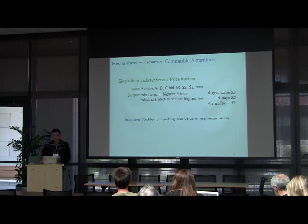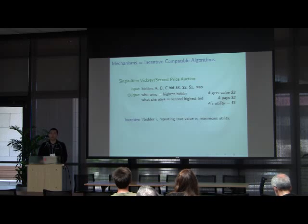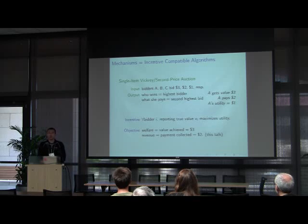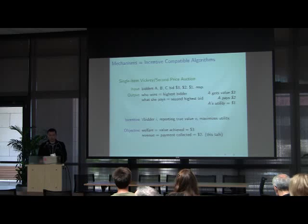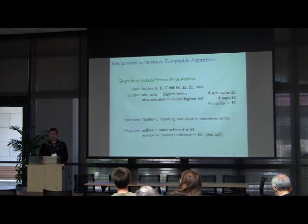The Vickrey auction is incentive compatible, or truthful, in the sense that for every bidder, reporting the true value maximizes utility. In general, if an algorithm is incentive compatible, we call it a mechanism. We study different objectives in mechanism design — commonly welfare and revenue. Welfare is the value achieved by the mechanism, which is $3 in this case, and the revenue is the payment collected, which is $2.